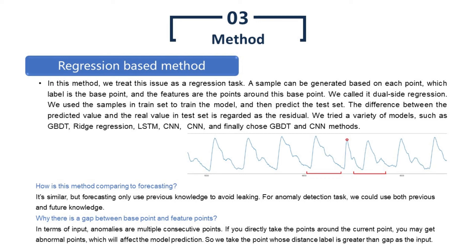How is the method comparing to forecasting? It's similar, but forecasting only uses previous knowledge to avoid leaking. For the anomaly detection task, we could use both previous and future knowledge. Why there is a gap between the base point and feature points? In terms of input, anomalies are multiple consecutive points. If you directly take the points around the current point, you may get abnormal points, which will affect the model prediction. So we take the point whose distance label is greater than the gap as the input.